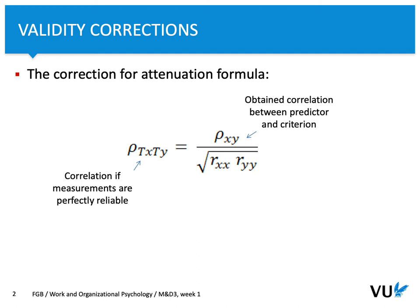To calculate this perfect validity — this perfect correlation between two measures — you need to take into account the obtained correlation between a predictor and a criterion, let's say personality and work performance, and then you need to take into account the reliability of the first variable, the predictor, and the reliability of the criterion.